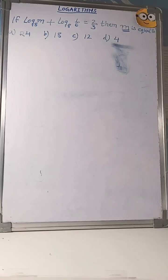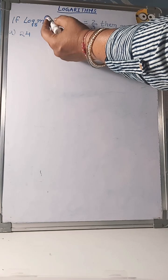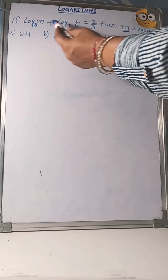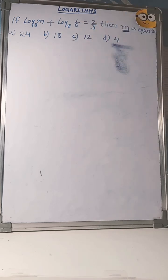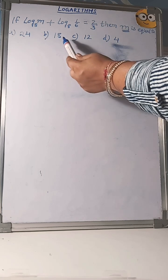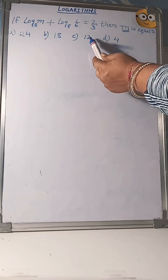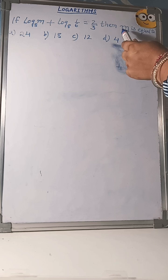Hello everyone. Our question is: if log m to the base 8 plus log 1/6 to the base 8 equals 2/3, then m is equal to 24, 18, 12, or 4. We have to find the value of m.